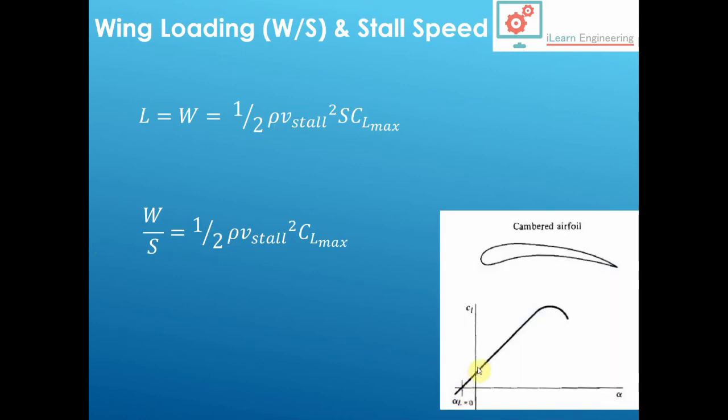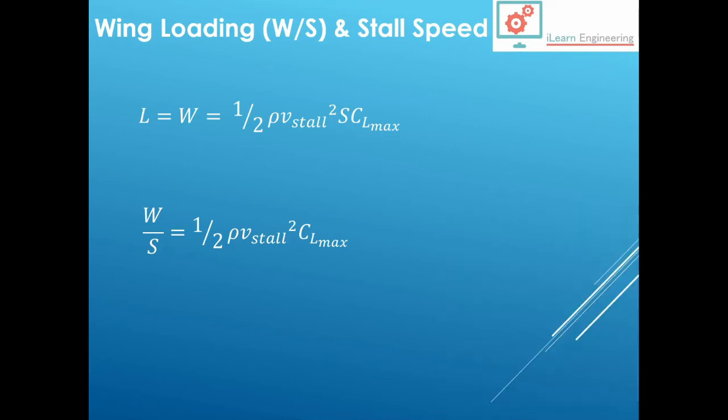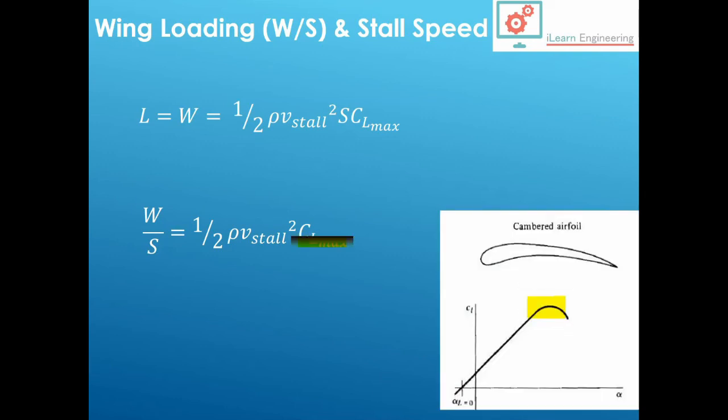Here's a typical airfoil, cambered airfoil, and you get the CL graph here. This is the lift coefficient against alpha, which is the angle of attack. Because it's cambered, it means that it crosses the CL axis above zero. So that does mean you can generate some positive lift at negative angles of attack. And the CL max refers to this value here.